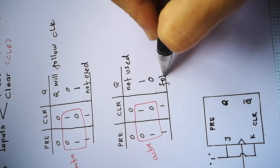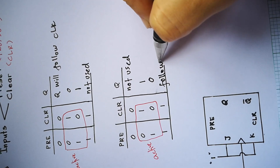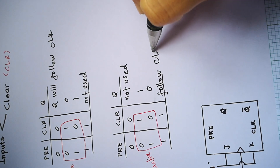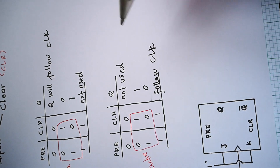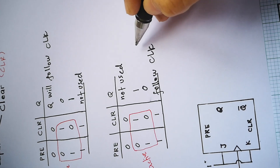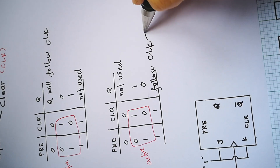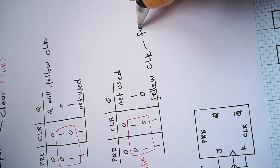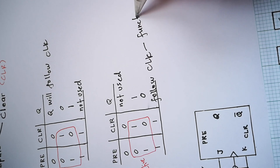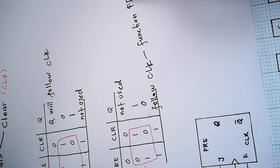For active low, when both pre and clear are 1, it will follow the clock — inverse from active high. When it follows the clock, it will function as a flip-flop.